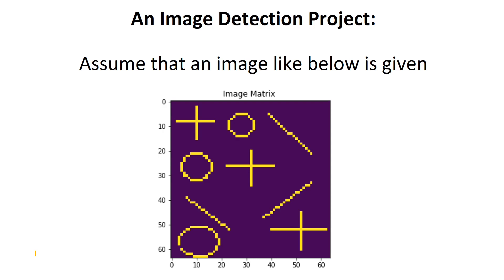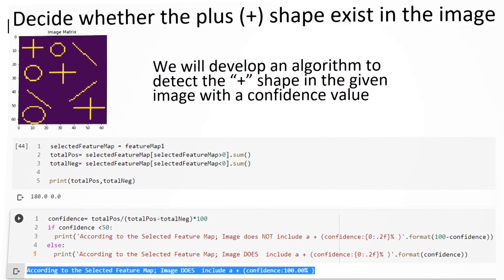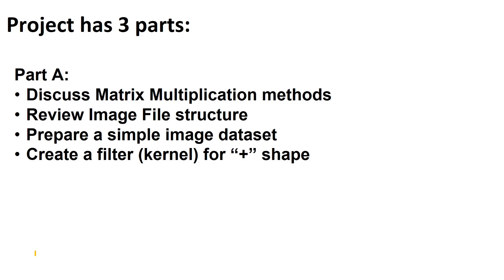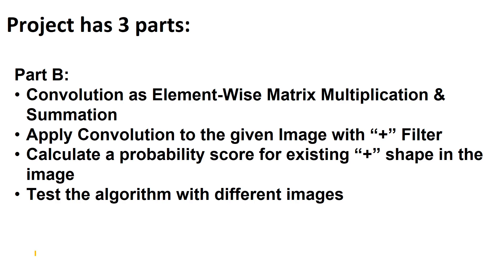We are going to locate a plus sign if it exists in the given images. In the first part of that video series, we already talked about how to find that by using matrix multiplication methods and a filter. In this video, we are going to continue with part B, where we implement the convolution as element-wise matrix multiplication and the summation of all resulting values. We are going to apply the convolution to the given images and test the algorithm with different images and different image sizes.